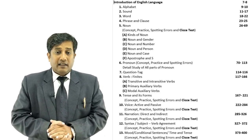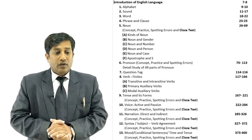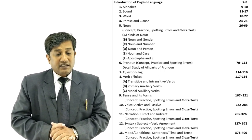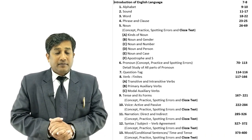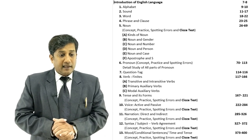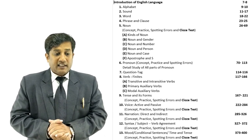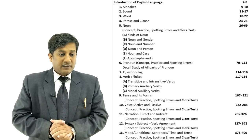The next topic is Verb. Verb has two types: finite verb and non-finite verb. Under finite verb, transitive, intransitive, primary auxiliary, modal auxiliary, tense and its forms are covered. When you study tense you will feel that experience. Then active and passive voice is the next topic, with practice, spotting errors, and cloze test — all separate. Then comes Narration, also with spotting errors and cloze test. The next topic is Syntax, also called subject agreement, which also includes practice, spotting errors, and cloze test.